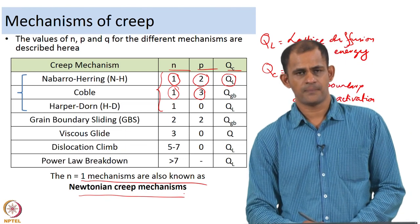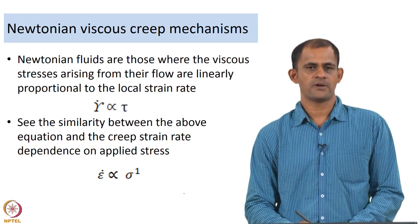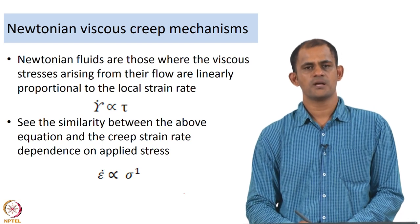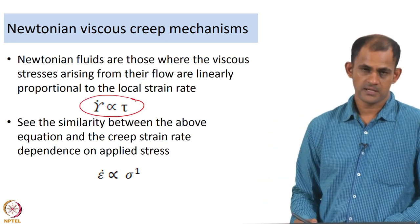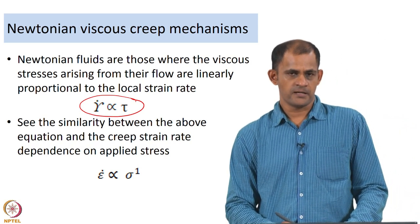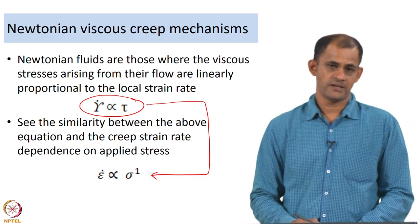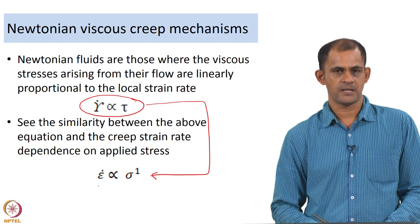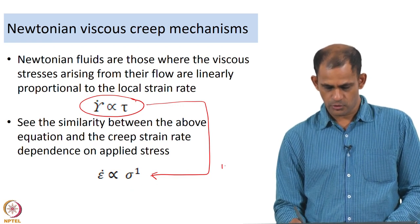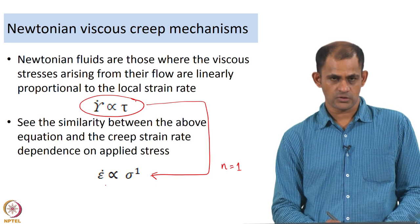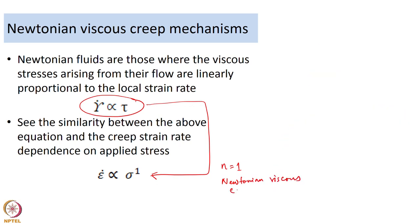Why are they called Newtonian creep mechanisms? Newtonian fluids are those where the viscous stresses arising from their flow are linearly proportional to the local strain rate. Essentially, the local strain rate is directly proportional to the applied stress. There is a similarity between this and the creep equation when N equals 1 — the creep rate is directly dependent on sigma. That is why all cases where N=1 are known as Newtonian viscous creep mechanisms.